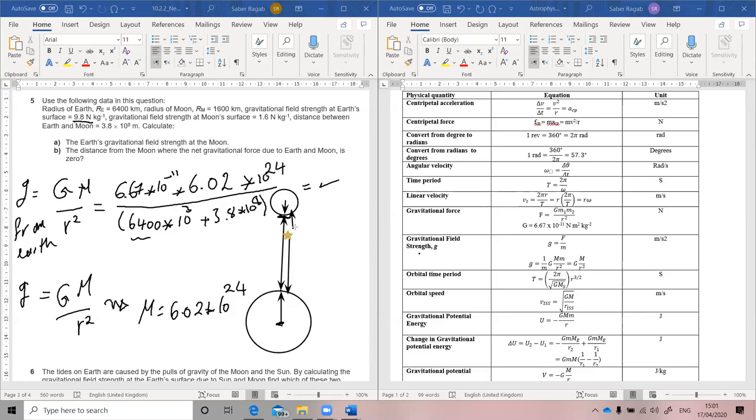Yeah. What is question number B, the question point B? The distance from the moon where the net gravitational force due to the earth and moon is zero.